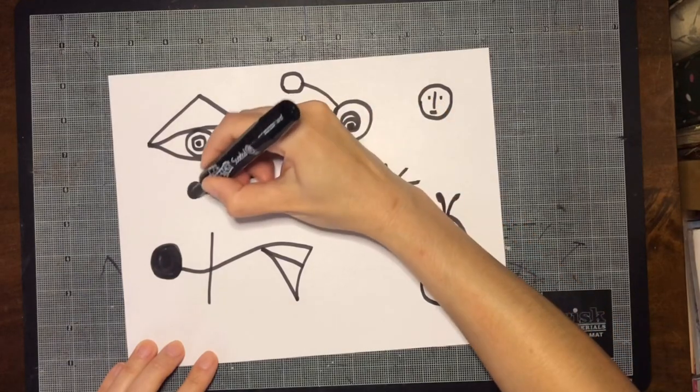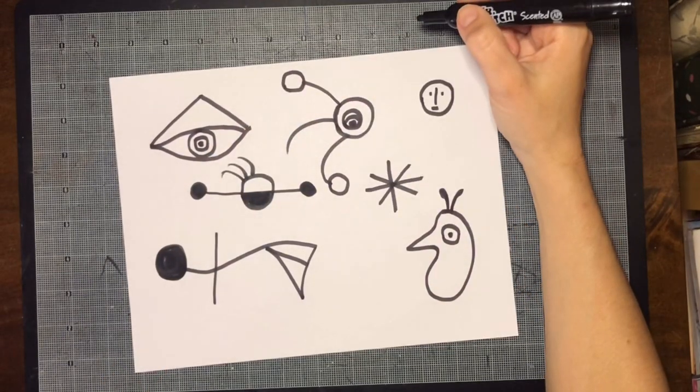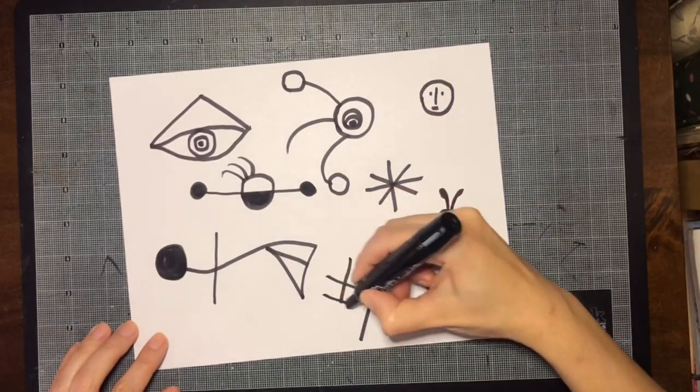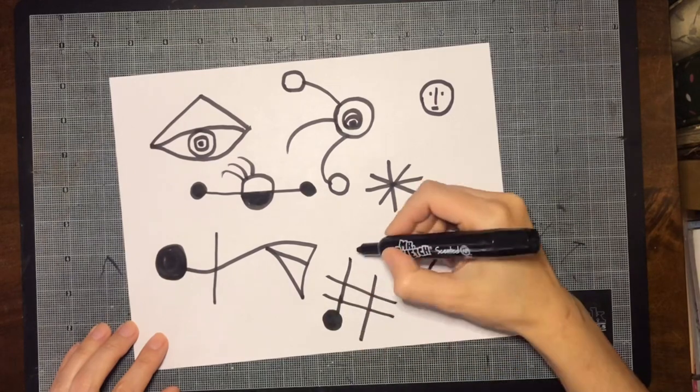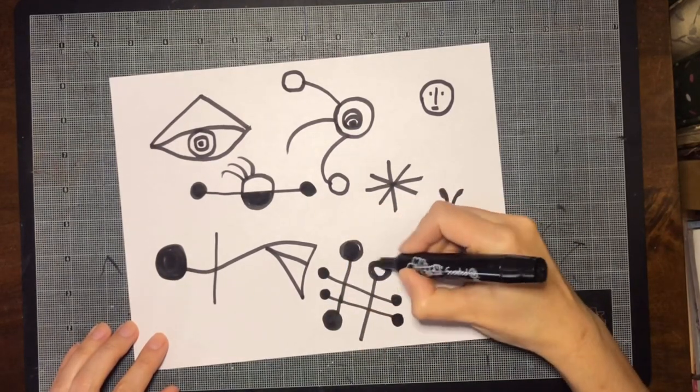You are just using black marker right now. You can fill some of these spaces with black color. Some of his images don't look like anything, they are just interesting shapes. Go ahead and do about six or seven different images.